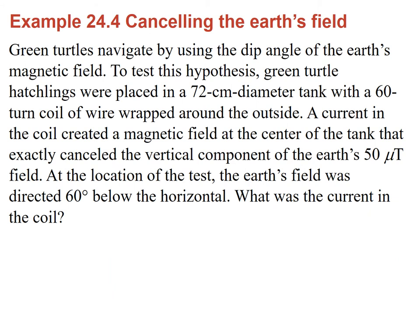Here is an interesting exercise. It turns out that some animals — birds, fish, and turtles — find their way by feeling the magnetic field of the Earth. But the magnetic field has a peculiarity: it is not exactly parallel to the surface. It is only parallel to the surface at the equator. In the northern hemisphere, the field points to the geographic north but also downward — at about 60 degrees below the horizontal. An experiment was done with green turtles, which find their way by sensing this downward-pointing magnetic field.